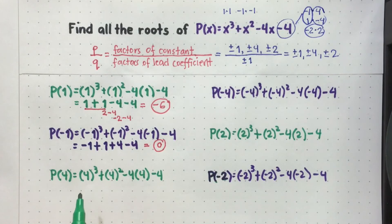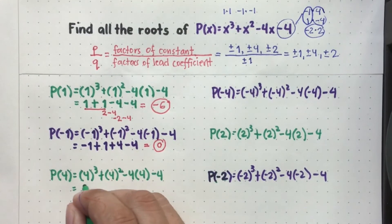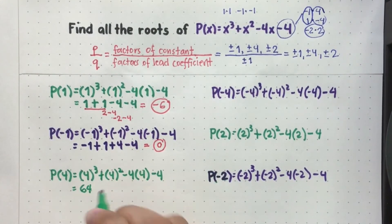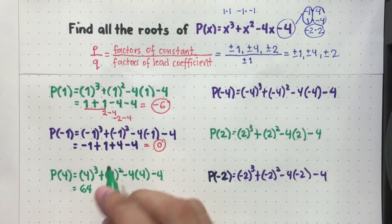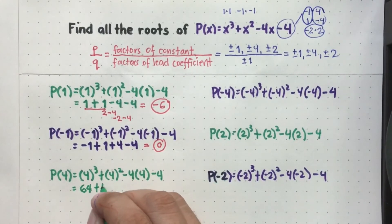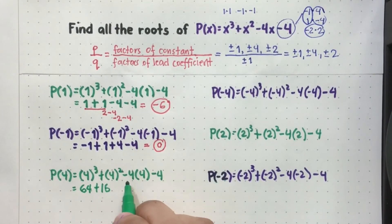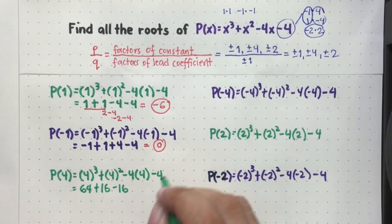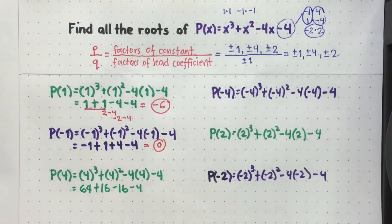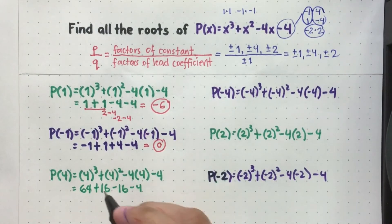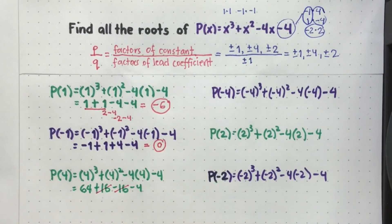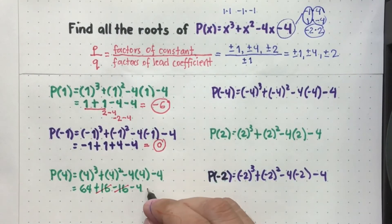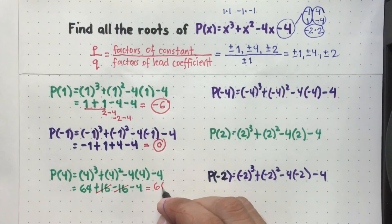Proceed to P(4): 4 cubed is 4 times 4 times 4, which equals 64. Then 4 squared is positive 16. Then negative 4 times positive 4 is negative 16. Copy negative 4. As you can see, meron tayong positive and negative 16 dito — pwede na natin silang i-cancel, magiging 0 na yan. So matitira 64 minus 4, and that is equal to positive 60. So P(4) is not a root.